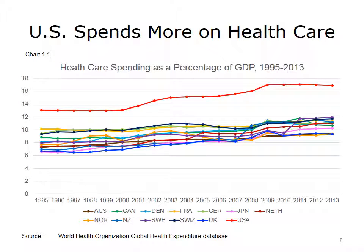There is a lot of evidence that points to the fact that there is a problem with health care value in the U.S. In information provided by the Commonwealth Fund, dollars spent as a percentage of gross domestic product, or GDP, is compared across 13 countries. This chart shows that the U.S., represented by the red line at the top, spends much more per capita on health care than any other nation, with a consistent trend beginning in 1995 and continuing through 2013, with U.S. spending continuing to increase proportionately faster.